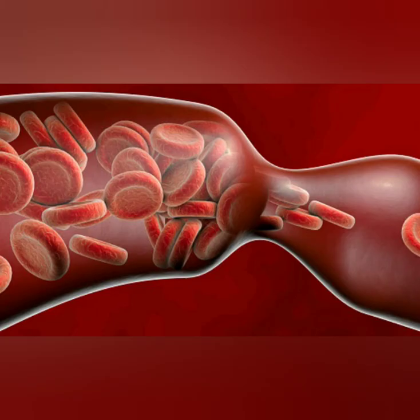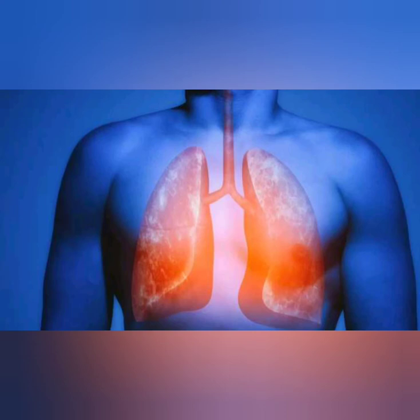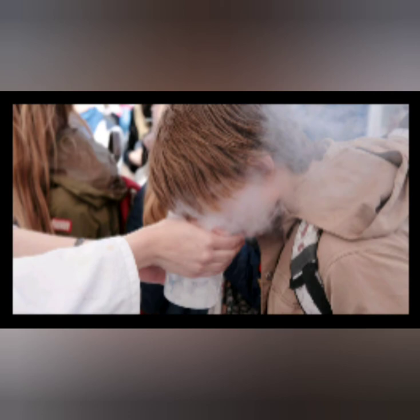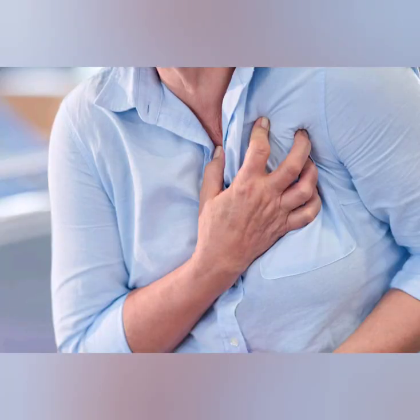When a blood clot breaks off and travels to the lungs, it's called pulmonary embolism. This is a serious condition and requires rapid medical attention. You should get emergency help if you have any of these warning signs: trouble catching your breath or breathing fast for no reason, pain in your chest which may be worse when taking a deep breath, fast heartbeat for no reason, dizziness, fainting or passing out, and coughing up blood, which is medically called hemoptysis.